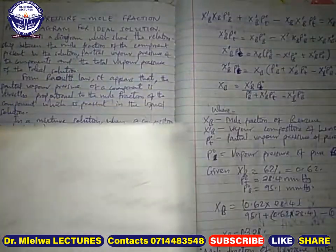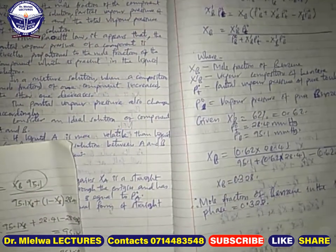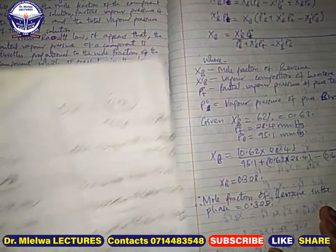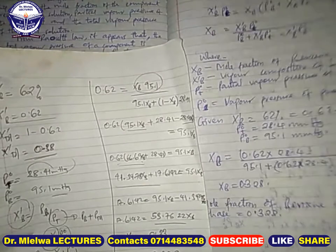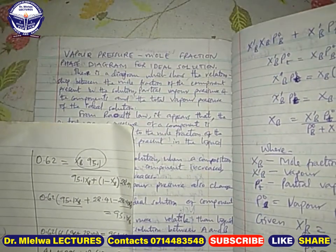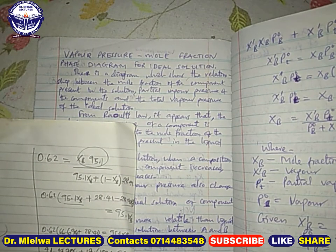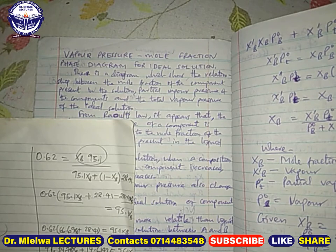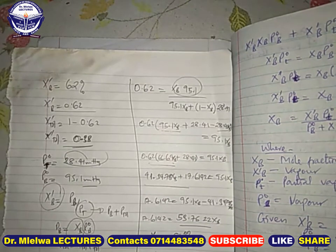This is the final answer for our question: the mole fraction of benzene in the liquid phase is approximately 0.33. The question was somewhat confusing but it is easier once approached systematically. In the next session, we will continue with the discussion on the vapor pressure–mole fraction phase diagram for an ideal solution. Thank you everybody, and I wish you nice studies.